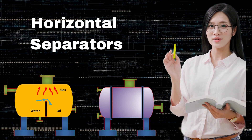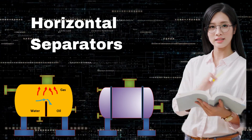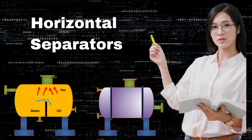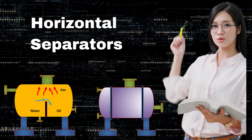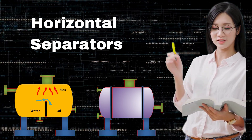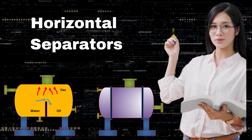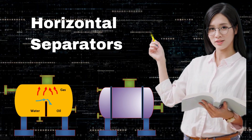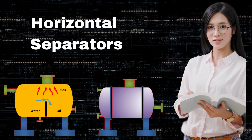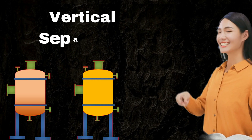The first type is the horizontal separator. This is the most common type of separator and consists of a horizontal vessel with internal baffles. When fluids enter the vessel, they are separated based on their densities. Horizontal separators are widely used because of their efficiency and versatility.